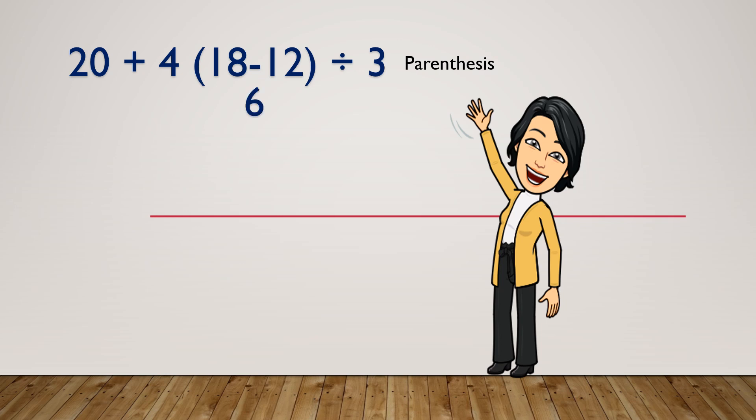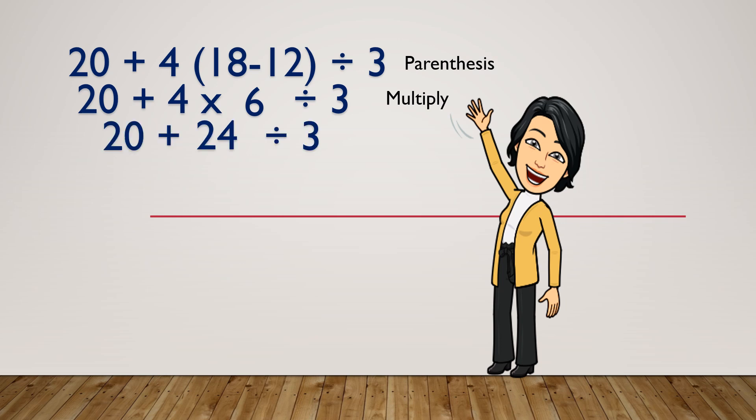Then copy the rest of the equation. Next to perform is multiplication. That is 4 times 6 equals 24. Then copy again the rest of the equation. The operations left are addition and division. So we will do division first. 24 divided by 3 equals 8.